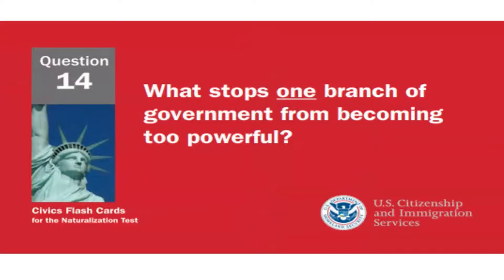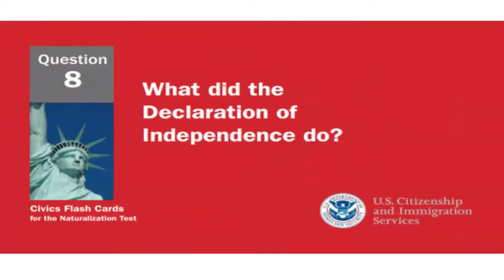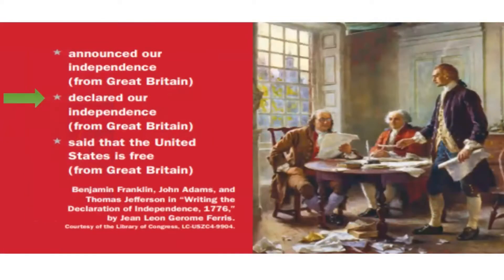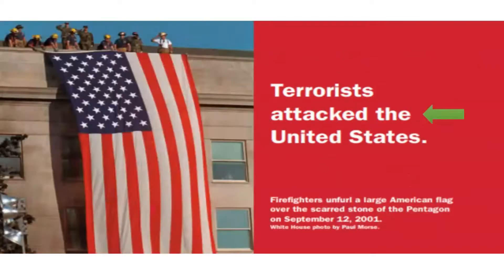What stops one branch of government from becoming too powerful? Checks and balances. What did the Declaration of Independence do? Declare our independence from Great Britain. What major event happened on September 11, 2001 in the United States? Terrorists attacked the United States.